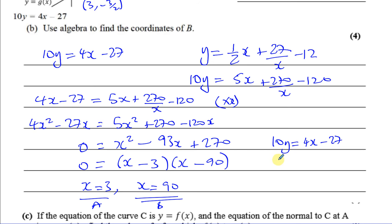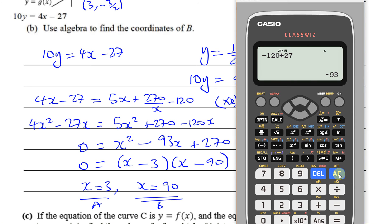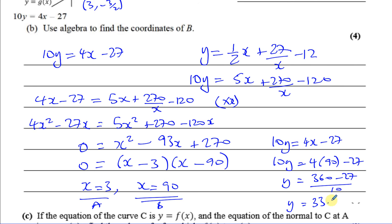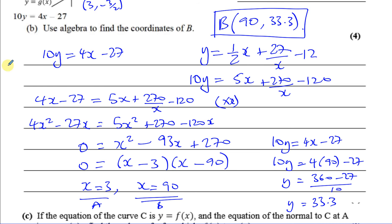To find the y-coordinate at B, substitute x equals 90 into 10y equals 4x minus 27. That gives 10y equals 360 minus 27 equals 333, so y equals 33.3. Therefore the coordinates of B are (90, 33.3). That's the answer to part b using simultaneous equations.